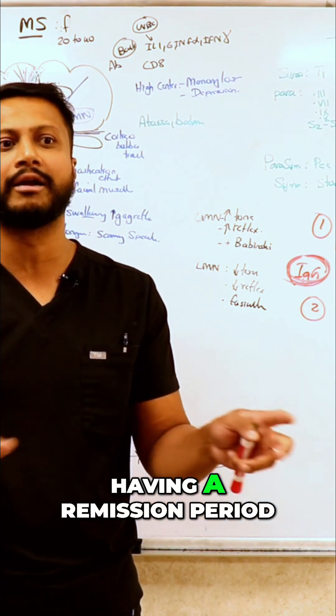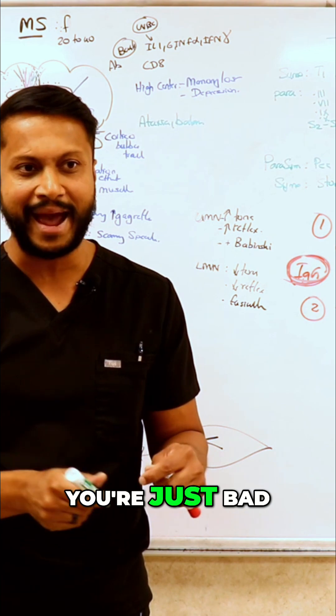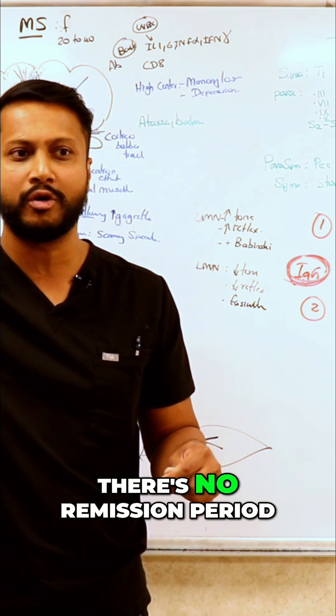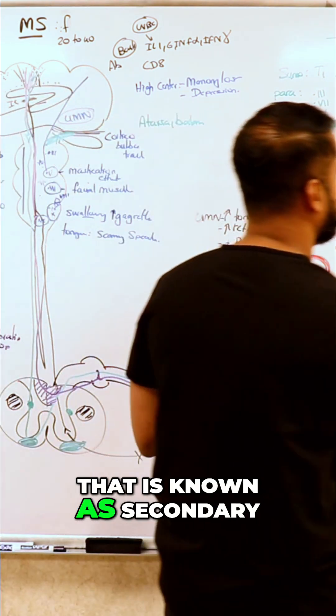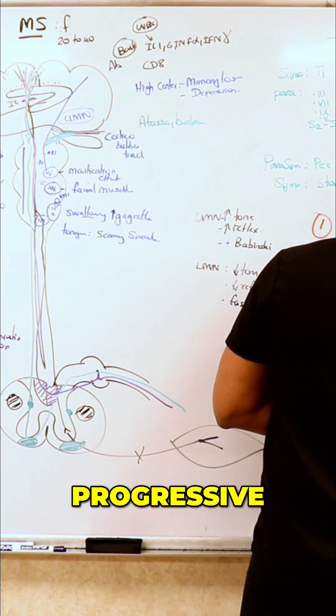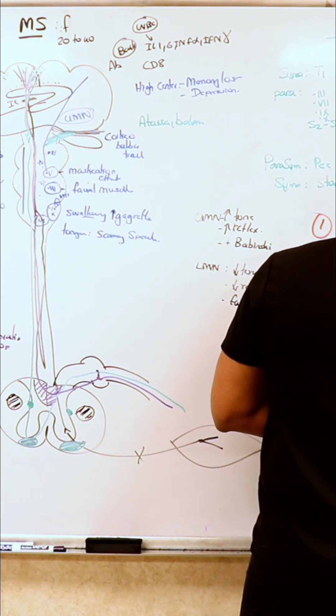Secondary progressive MS. Where now you're not having a remission period. You just bad, bad, bad, nonstop. There's no remission period at all. That is known as secondary progressive MS.